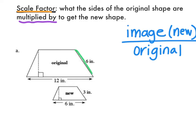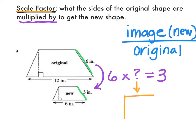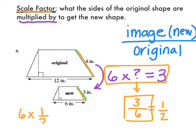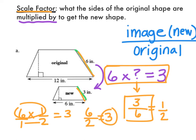Let's take a look at these two similar figures and their corresponding sides. I want to know what I had to multiply my original side by — 6 times something equals 3. You take the new side, which is 3, and put it over the original side, which is 6. So 3 over 6 simplifies to 1/2. Let's verify: 6 times 1/2 — putting a 1 under the 6 and multiplying across: 6 times 1 is 6, 1 times 2 is 2, and 6 divided by 2 is 3. So the scale factor is 1/2.